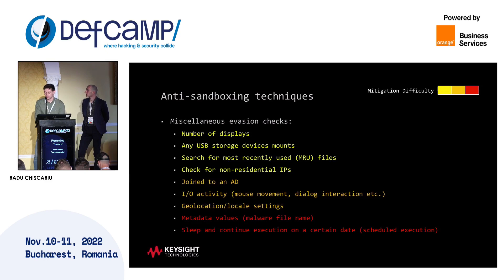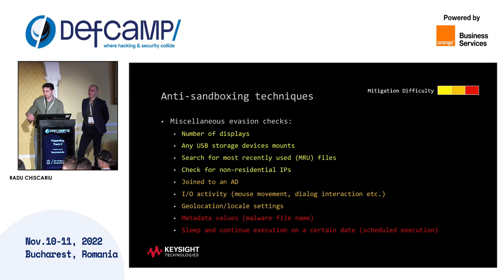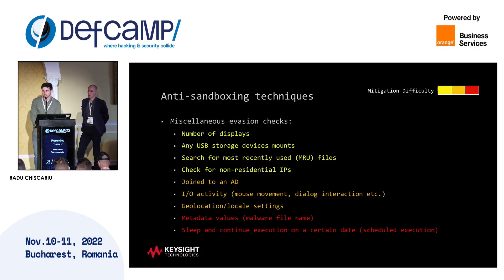What are some other anti-sandboxing techniques? These checks start to be really creative. For example, the malware will look for the number of displays — if there is only one, it might bail out. It will look for most recently used files — when you use Microsoft Word a lot, there is a list of recently opened files, and if that is absent, the malware concludes the system was not used at all and identifies it as a sandbox. They will also look if the sandbox is joined to a domain.